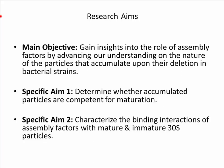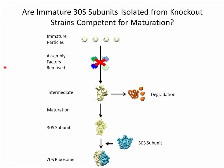The two specific aims were: first, to determine whether accumulated particles are competent for maturation; and second, to characterize the binding interactions of assembly factors with mature and immature 30S particles. A characteristic of mature ribosomal subunits is that they can associate to form 70S ribosomes. So an initial question was whether immature particles accumulating in assembly factor knockout strains are capable of maturation and subsequent association into 70S ribosomes, or whether they represent a dead-end product that would ultimately be targeted for degradation.